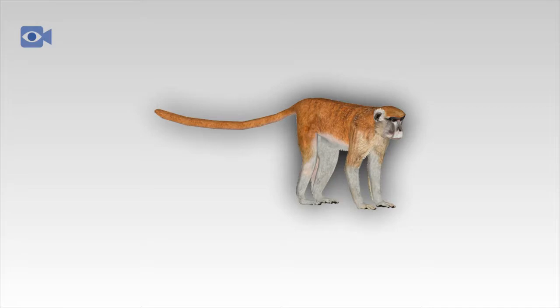Patas monkeys inhabit savanna plains, open woodlands and grass steppe that is well vegetated. They are known to be quite adaptable animals that are also found in arid areas including the southern fringes of the Sahara Desert, flooded deltas and even in moist forest where land has been cleared by people.